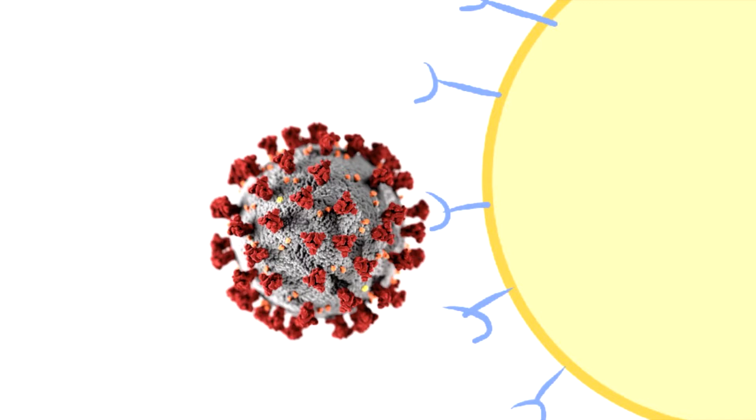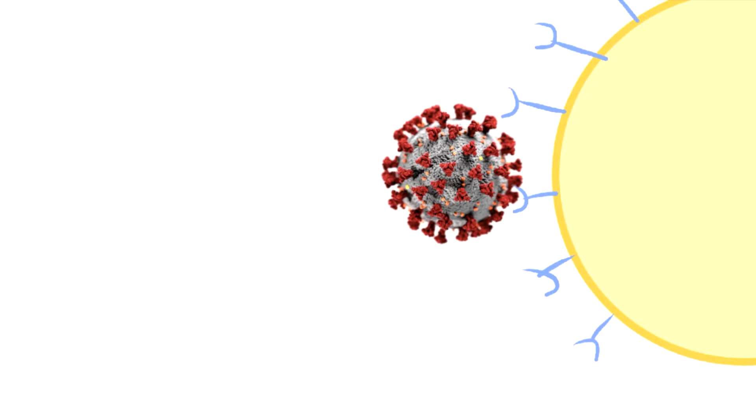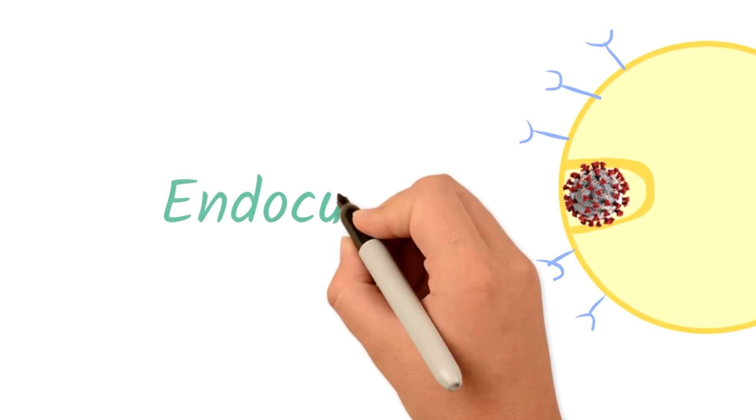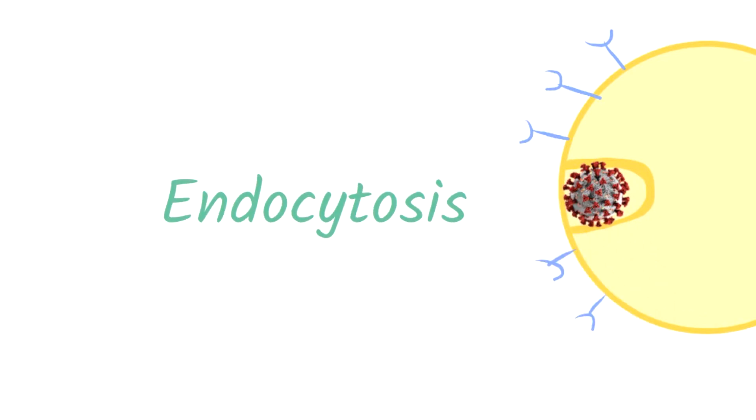Upon binding to the receptor, a molecule cuts the spike protein, which exposes some part of the virus's membrane. This exposure leads to the virus fusing with the host cell cellular membrane. Then, through a process called endocytosis, the virus enters the cell.